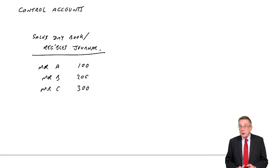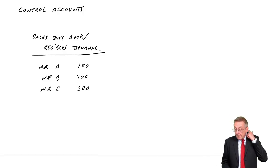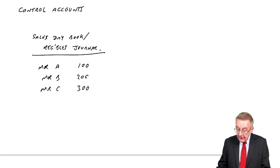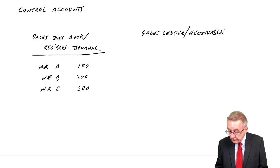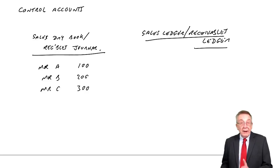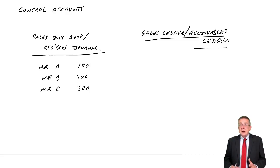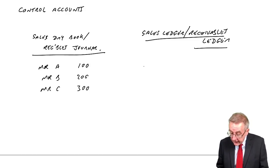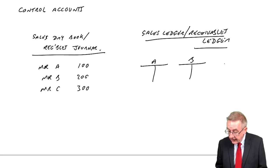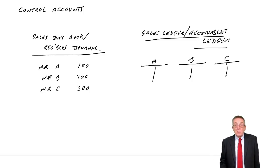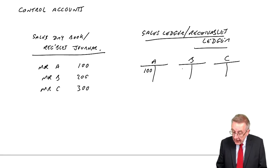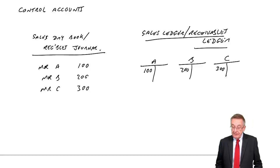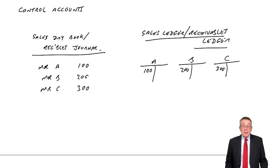At the same time, we'd be making a note of how much each customer owes in the sales ledger - or the other name, the receivables ledger. This isn't double entry, it's just a note. In this ledger, we had a page for each individual customer: Mr. A, Mr. B, Mr. C. We'd make a note of what they owe us. Mr. A owes us 100, we'd put a debit on Mr. A's page; B owes us 200; C owes us 300. But still no double entry - we just made a note.